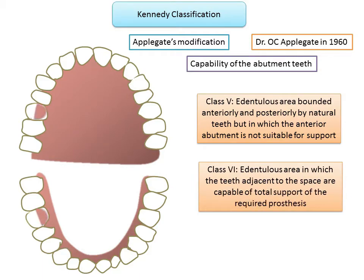Class 6 is an edentulous area in which the teeth adjacent to the space are capable of total support of the required prosthesis, so the denture hardly requires any tissue support. Most removable partial dentures are tooth-and-tissue-supported, hence this condition is classified as a separate group. Class 6 is the most frequently presented case in clinical practice, whereas Class 5 is quite rare.